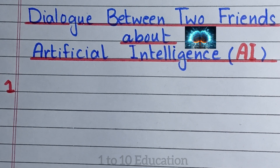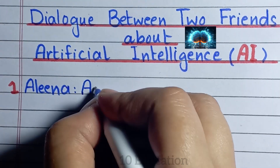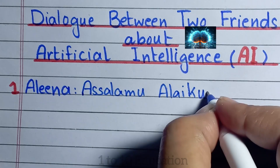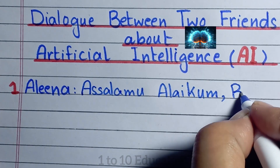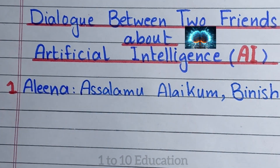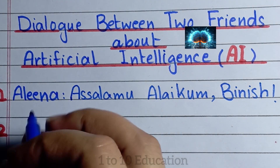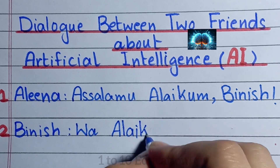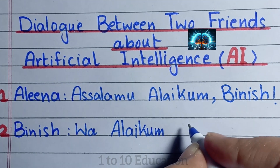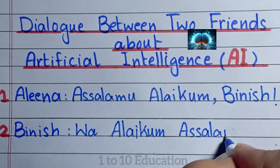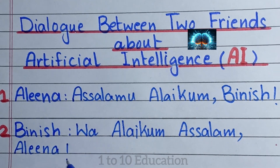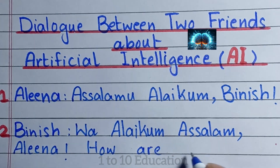Dear friends, welcome to my channel 1 to 10 education. Today, we will learn and write a dialogue between two friends about artificial intelligence. Number 1. Alina: Asalaamu alaikum, Banish. Number 2. Banish: Wa alaikum asalaam, Alina. How are you?